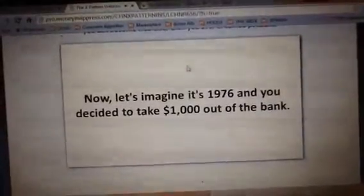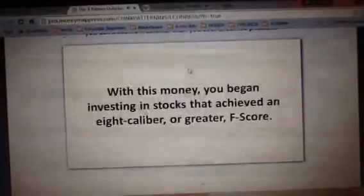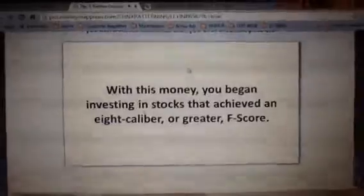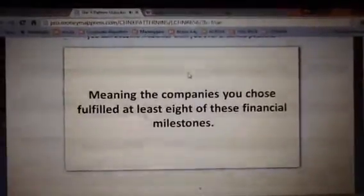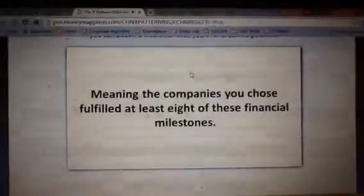Now, let's imagine in 1976, you decided to take $1,000 out of the bank. With this money, you began investing in stocks that achieved an 8 or greater F-score, meaning the companies you chose fulfilled at least eight of these financial milestones.